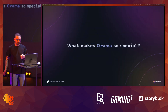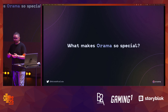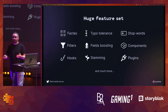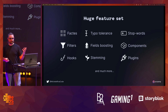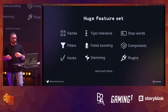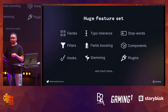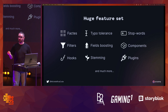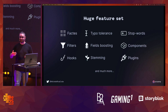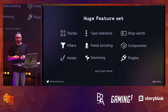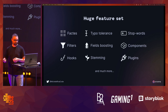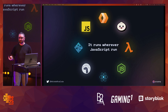What makes Orama special? It has a large feature set: facets support, typo tolerance, stop words, filters, facet busting. Most importantly, it has components and hooks — you can test your own algorithms and data structures using our test suite. For example, we use a Patricia tree for storing words, and you can implement your own radix or prefix tree using our opaque interface and verify correctness. It's written in JavaScript with no dependencies at all, so it runs wherever JavaScript runs.